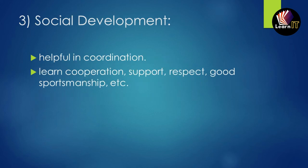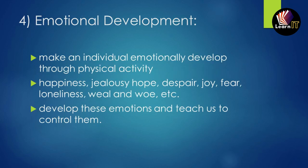The next point is social development. The objective of physical education is related to social skills, which are helpful in coordination. During a competition, players of different regions come together on a single platform, so they learn cooperation, support, respect, and good sportsmanship. Through these skills, players can make their nation healthy and strong. Our fourth point is emotional development.